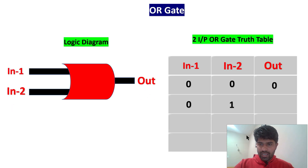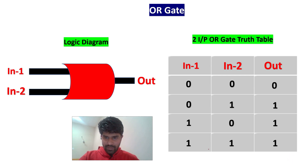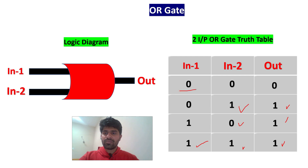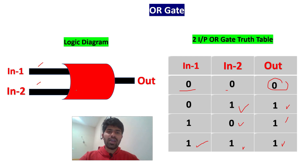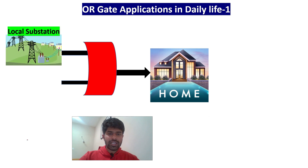Now the OR gate — it is very simple. If you see this table: if both inputs are one, output is one. If any one input is one, output is one. But if both inputs are zero, output is zero. It means for the OR gate, any one of the inputs should have a value; otherwise output will be zero. It is very easy to remember.